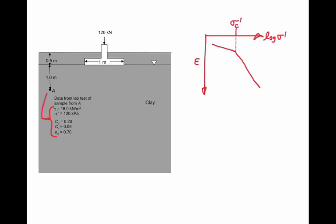From this lab test, we have determined the pre-consolidation stress, the slope of the virgin curve, and the slope of the reload curve. Now the first question we have to ask ourselves is: is this soil over-consolidated or normally consolidated? To determine this, we will have to calculate the initial effective stress at point A and compare that to the pre-consolidation stress.